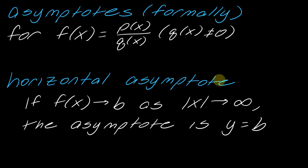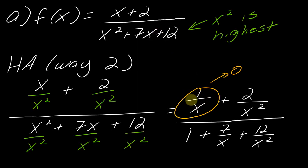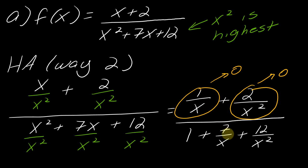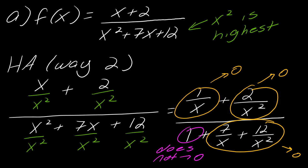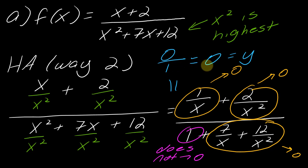Remember, to find the horizontal asymptote, we assume x is going to infinity — that's baked into the definition. So 1 over x goes to 0, and 2 over x² also goes to 0. Any number over x goes to 0. All the terms in the denominator with x also go to 0. The only thing left is the 1 in the denominator. So I have 0 over 1, which equals 0. The horizontal asymptote is y equals 0.